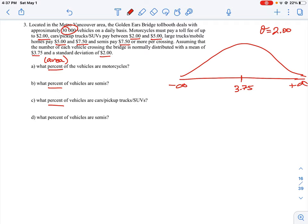In this case, we're measuring dollars for our x-axis. Let's start plotting intervals. Motorcycles pay up to $2.00, so $2.00 is going to be below the mean. Cars and pickup trucks go from $2.00 to $5.00, so $5.00 is going to be over the mean. Then we have $5.00 to $7.50 and $7.50 and up. These are the set of intervals we're working with.